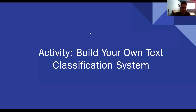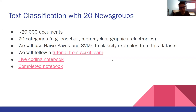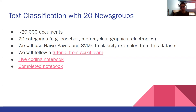So we can move into the text classification system example. We're going to work with a dataset called the 20 newsgroups dataset. It contains 20,000 text documents coming from 20 different categories — some of which include baseball, motorcycles, graphics, electronics, and so on. Our goal is to classify each of these documents into the correct category.